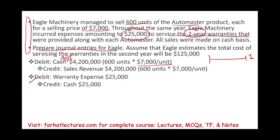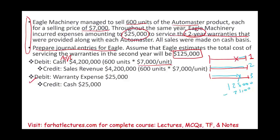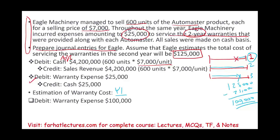At the end of the year, we are told the total warranty expense for this product for the next two years — year two and year three — is estimated to be $125,000. Bear in mind, we already incurred $25,000 during the year of sale. So what's left, based on our estimate, is $100,000 of warranty obligations. Therefore, at the end of year one, we have to book an expense of $100,000 and credit warranty liability for $100,000.